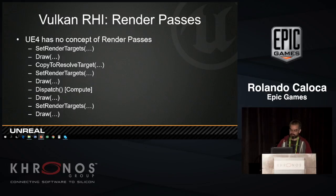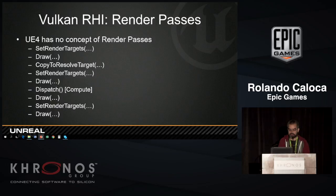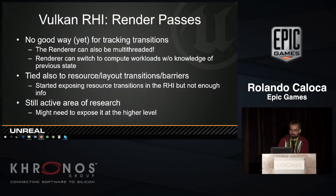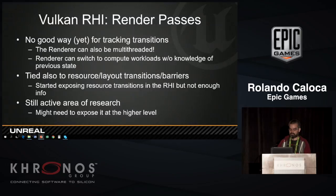I mentioned problems with image layouts — we're not passing validation yet. This is a problem because of render passes. UE4 basically doesn't have a concept of render passes. You could have the high level doing something like: set render target, draw, resolve the MSAA buffer, set render target, draw, trigger some compute, draw, set render target, draw. This is probably a problem all older or non-modern engines have. We don't have a good way of tracking transitions — the only way would be inside the RHI, but then we have to deal with the multi-threaded render and compute switching. So we started exposing resource transitions in the RHI, but we still don't have enough info. We're still researching how to expose this on the engine because it's a big change and we don't want to break licensees.